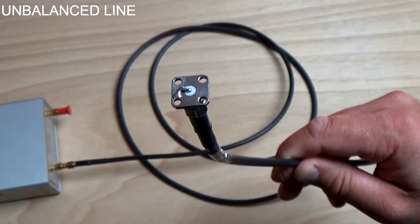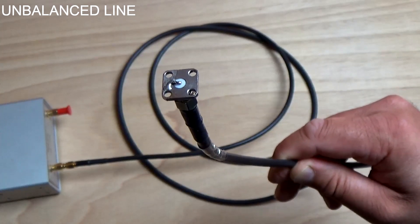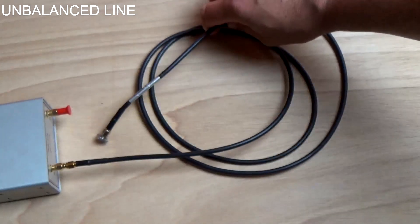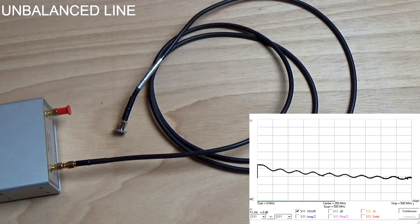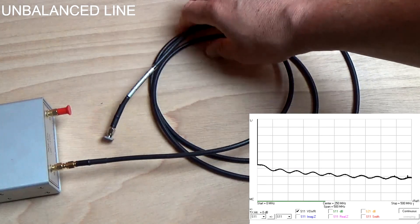Let's do the same experiment with an unbalanced coaxial line. In this case, an SMD resistor is soldered on top of a SMA connector. In this case, touching the line or even grounding it changes nothing.